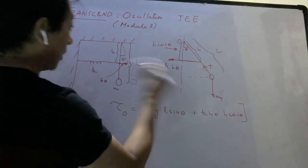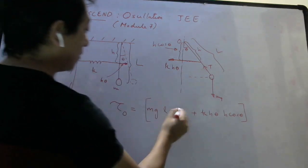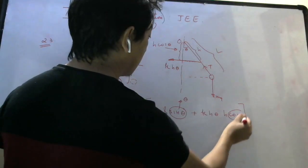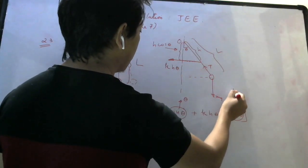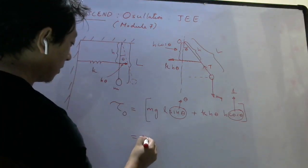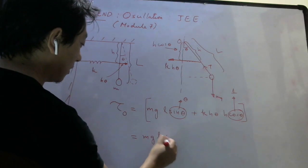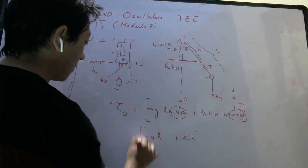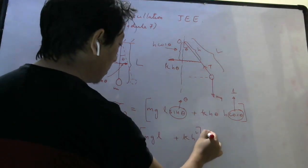Now, for small oscillations, theta will be small. So sine theta can be replaced by theta. Cosine theta can be replaced by 1. For small angles, cos of angle is 1. So your torque will be MgL theta plus KH square theta. You can take theta common. That will be your torque.